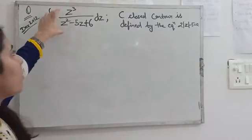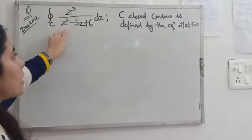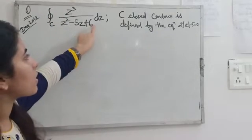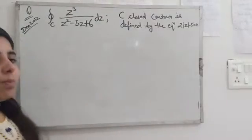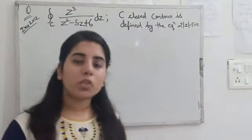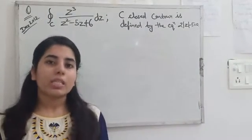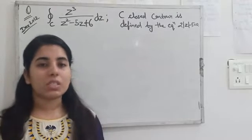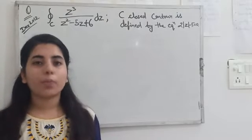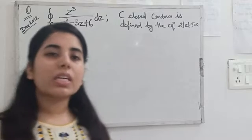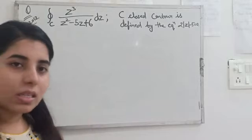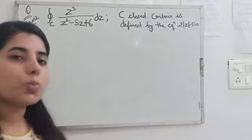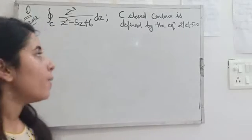When we solve this question with the help of Cauchy's residue theorem, we need to find the residues first. To find the residues we need poles, and we find residues at those poles which lie within the given region.